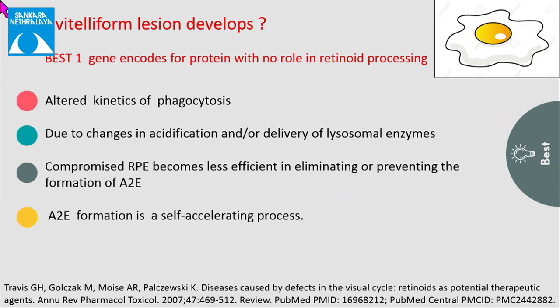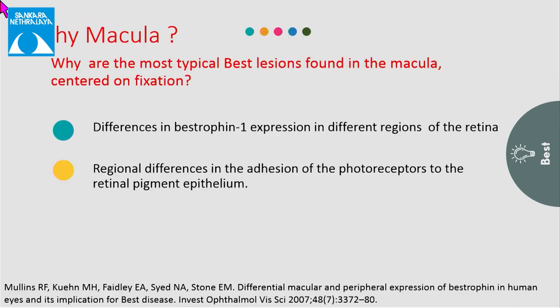Why does a vitelliform lesion develop in Best disease? The reasons could be altered kinetics of phagocytosis or changes in the acidification or delivery of lysosomal enzymes. Why is the macula affected? This could be because of differences in bestrophin-1 expression in different regions of the retina, or differences in the ratio of photoreceptors to RPE cells.